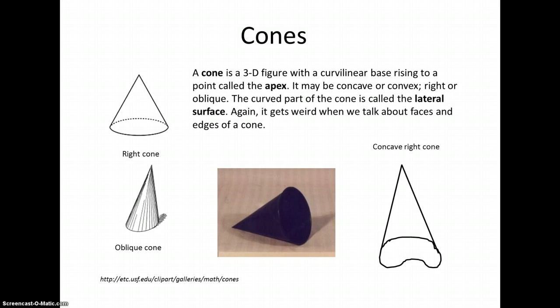A cone can be concave or convex. It can be right or oblique, and we see several pictures here, including the orientation of the purple cone which is laying on its side if we think about a real-world example, but it's still a cone.